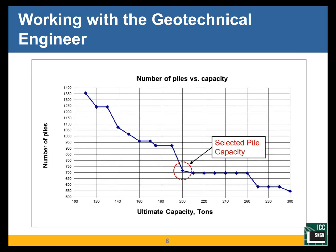You can generate a graph like this where you can look at the relationship between pile capacity and the quantity of piles required. You can see that in this particular case there's a significant drop in the number of piles required if you chose a capacity of 200 tons versus 190 tons. It's not very much difference in the total length of each pile required, but the total number is dramatically reduced, and therefore the cost is reduced.